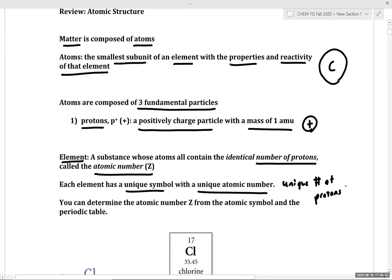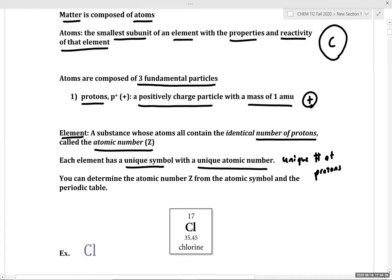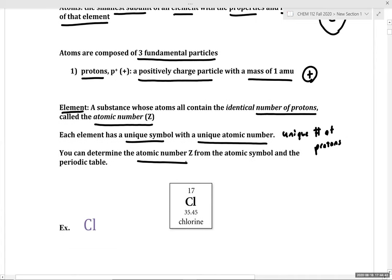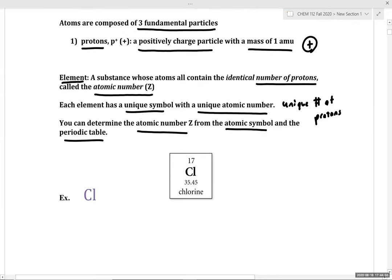The number of protons directly determines the identity of our element. We can figure out the atomic number Z from the atomic symbol and the periodic table. For example, looking at chlorine — a common element in organic chemistry — the number above the element symbol is our atomic number.